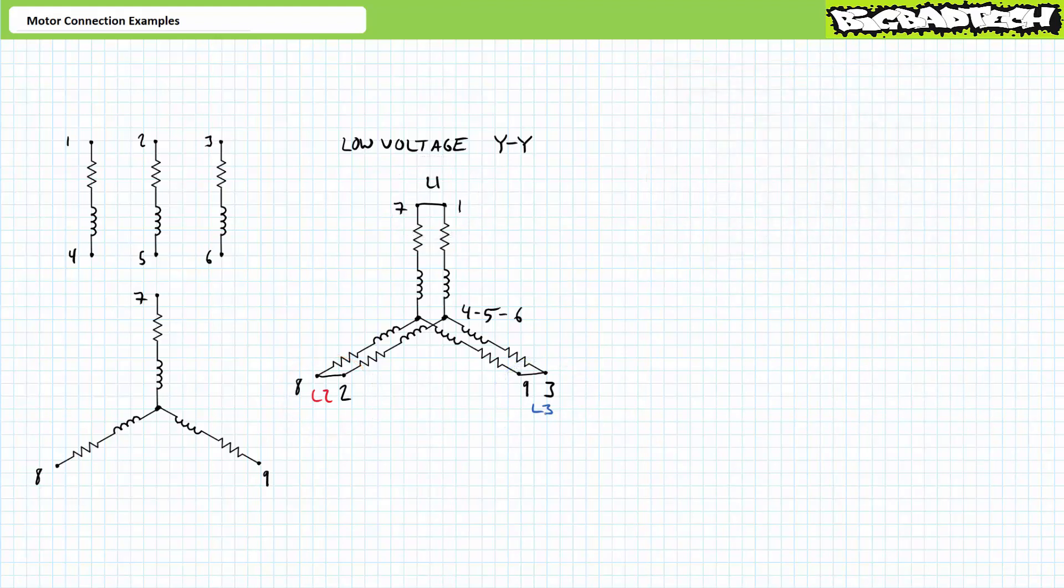Let's use an ohmmeter to check our work. As presently configured, we have access to the conjoined terminals one-seven, two-eight, and three-nine where each point of the Y is essentially two identical windings in series in parallel with another two identical windings in series. Point one-seven to two-eight is winding one-four in series with winding five-two in parallel with winding seven in series with winding eight.